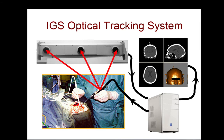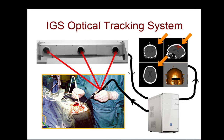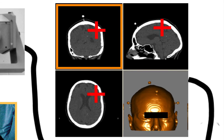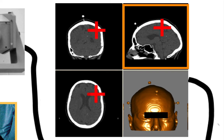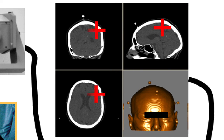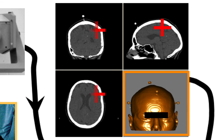The computer sends a signal to the display where this position is shown in 1, 2, 3, or even 4 views of the patient. Here we see in the upper left a coronal view, in the upper right a sagittal view, and in the lower left a transverse view. In the lower right there's a rendering, which looks like a 3D snapshot of the patient — in fact a rendering generated from the CT image itself.